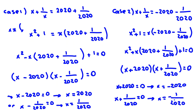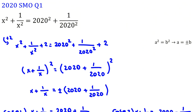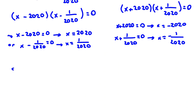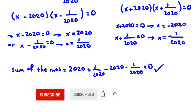We've found all four roots. The problem says find the sum of the roots. You could note that if t is a root then negative t is also a root, so the sum equals 0 without full solving. Indeed: 2020 plus 1 over 2020 minus 2020 minus 1 over 2020 equals 0. We've solved this.